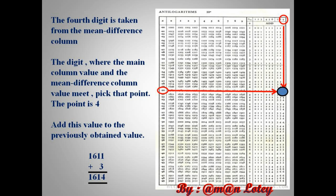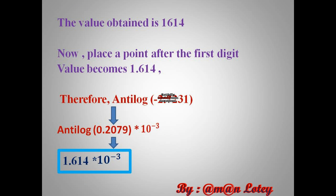There are some images on the internet where the value of 0.20 and the mean difference value 9 meet at 4, which is wrong. The exact value is 3, which is taken from the book. So we should add the value of 3 to the previously obtained value to get the answer 1614. Now place a decimal point after the first digit; it becomes 1.614. We first converted antilog minus 2.7921 into antilog 0.2079 × 10 raised to power minus 3. We then calculated the value of antilog 0.2079 and obtained 1.614. Putting this value into the equation, we get the answer: 1.614 × 10 raised to power minus 3.